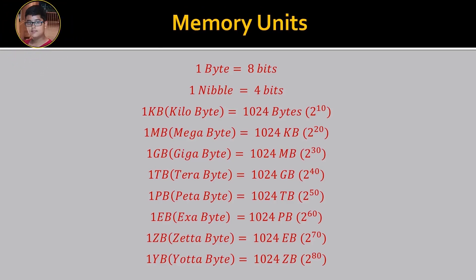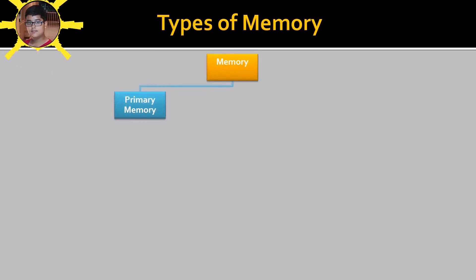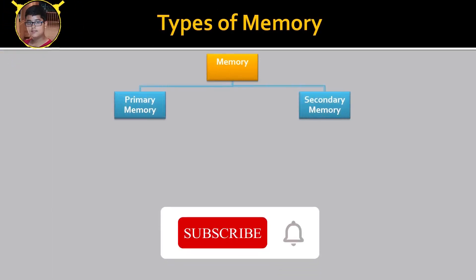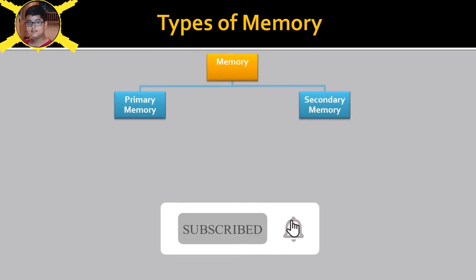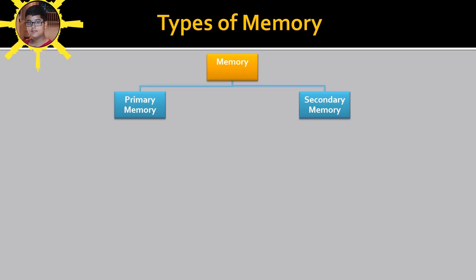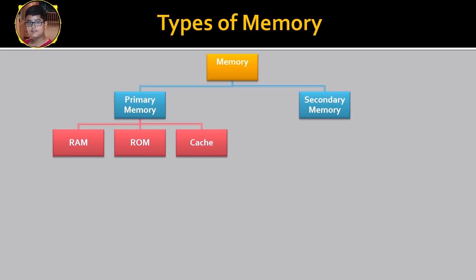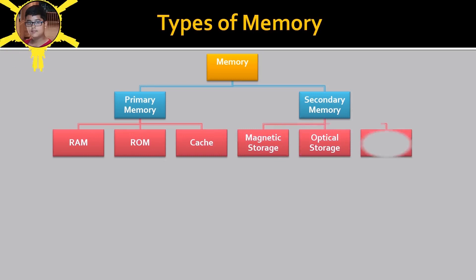Now come the types of memory. Memory is of two types: primary memory and secondary memory. Primary memory is further divided into RAM, ROM, and cache memory. Secondary memory includes magnetic storage, optical storage, and solid state storage.